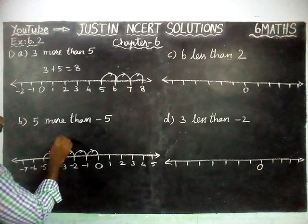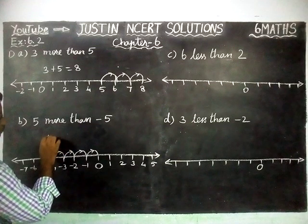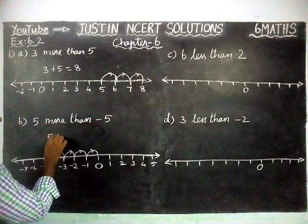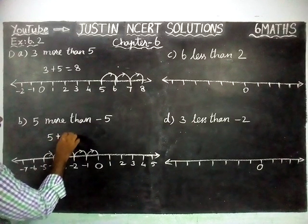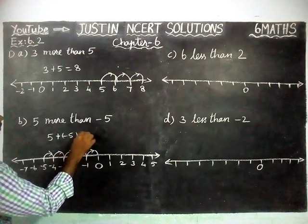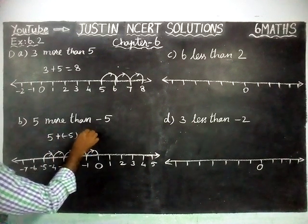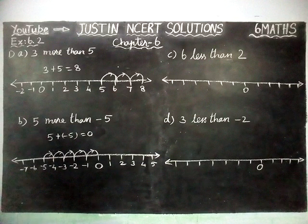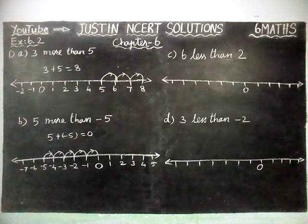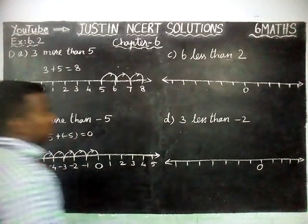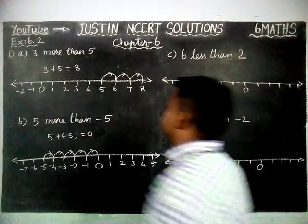So 5 more than minus 5 is equal to 5 plus minus 5, which is equal to 0. Next, part (c).